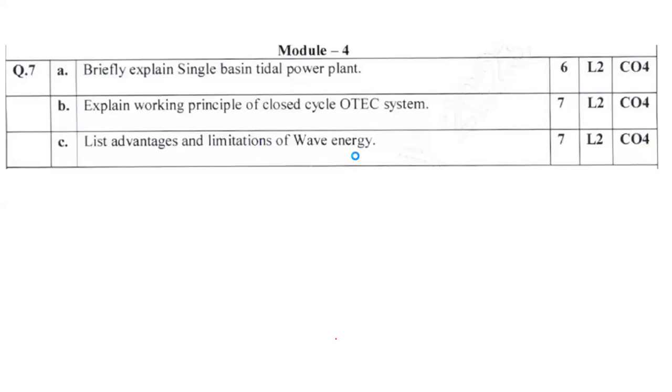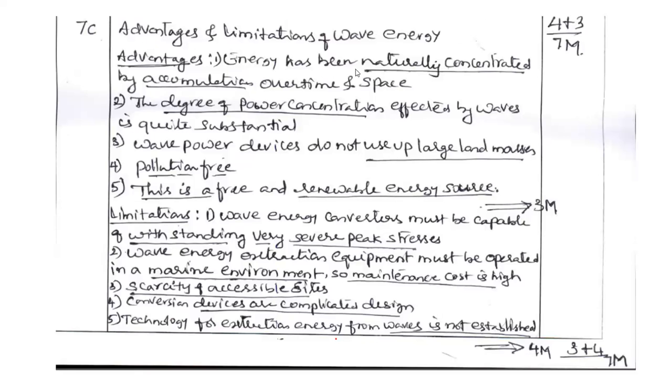Question number 7c: List the advantages and limitations of wave energy. What is wave energy? Advantages - energy has been naturally concentrated by accumulation over time and space. Then degree and power concentration effect waves, it's quite substantial. Wave power does not use up large masses. Pollution free. Of course this is a free and renewable energy source. Those things you can mention. In addition to that if you are feeling any other points that can be also added. Then limiting factors - what are the limitations? Wave energy conversion must be capable of withstanding very severe peak stresses. Wave energy alternation equipment must be operated in marine environment, that is too difficult. So it is too expensive as well. Maintenance cost is too high. Scarcity of accessible sites. Wave energy sites are located in very rare places of the world. These are the few important setbacks we can mention.